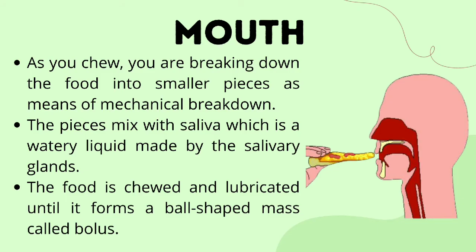As you chew, you are breaking down the food into smaller pieces — a process of mechanical breakdown. The pieces mix with saliva, a watery liquid made by the salivary glands. The food is chewed and lubricated until it forms a bowl-shaped mass called bolus. The organs that help the mouth do this mechanical breakdown are the teeth and the tongue. Our saliva also helps because it contains an enzyme called salivary amylase, which further breaks down food. So, digestion already begins in the mouth.